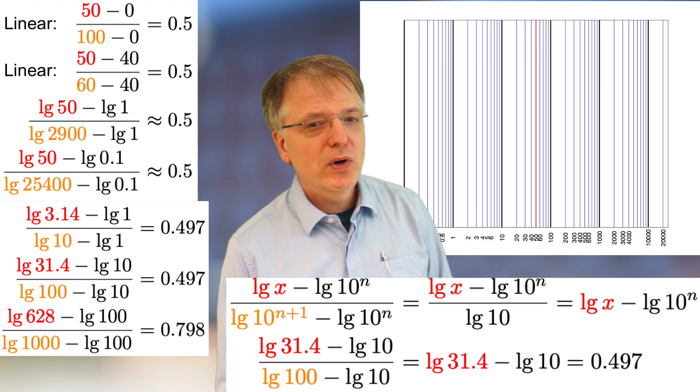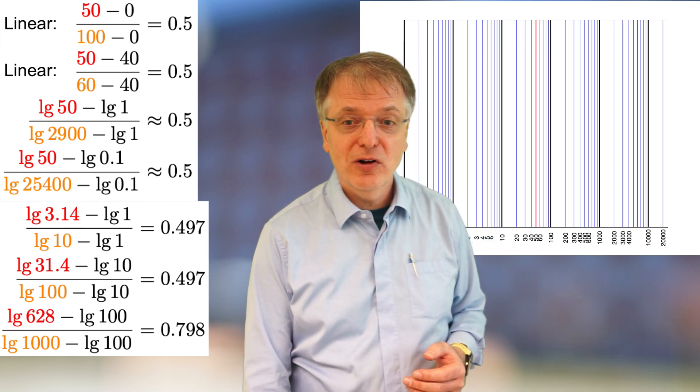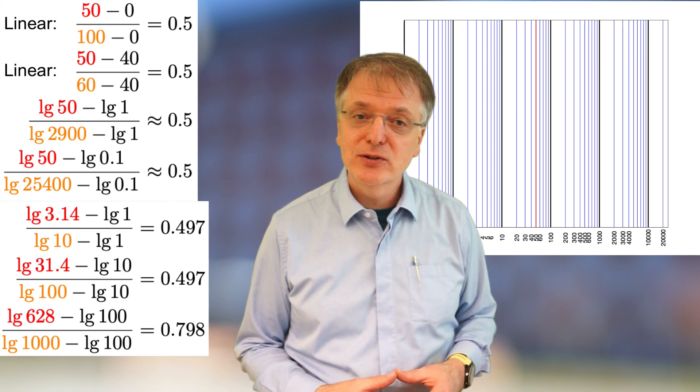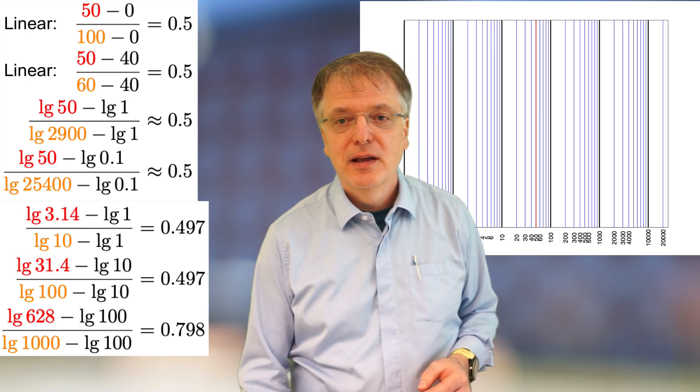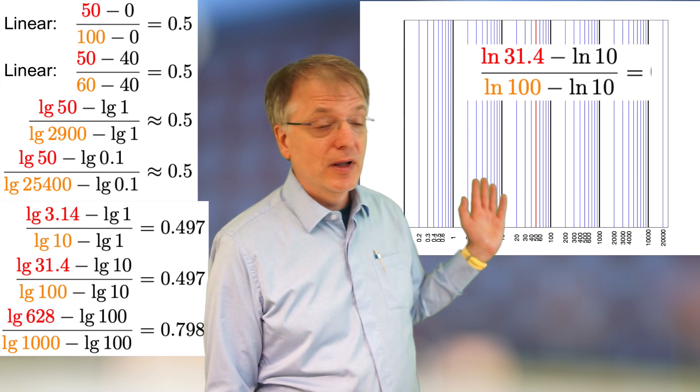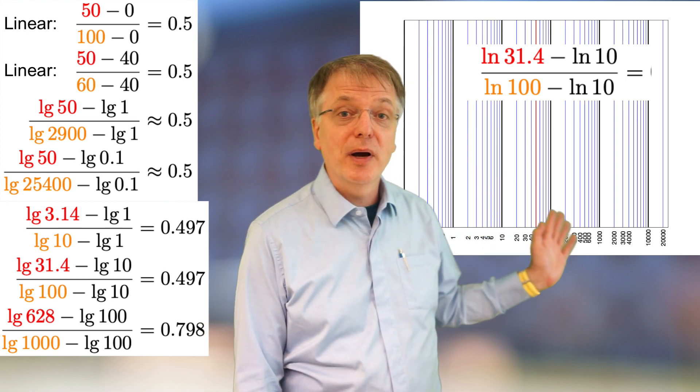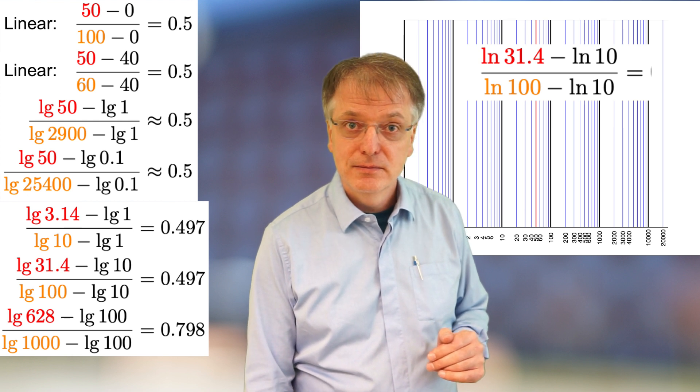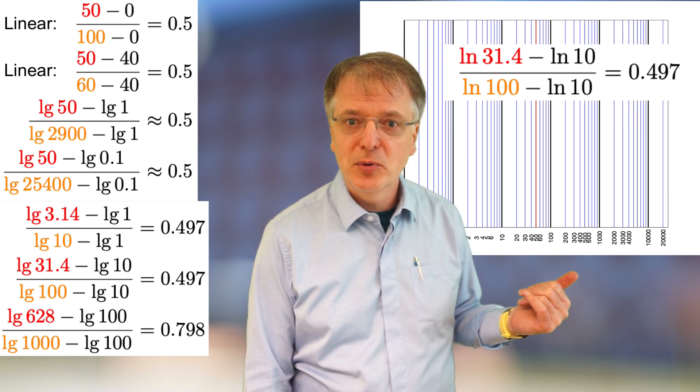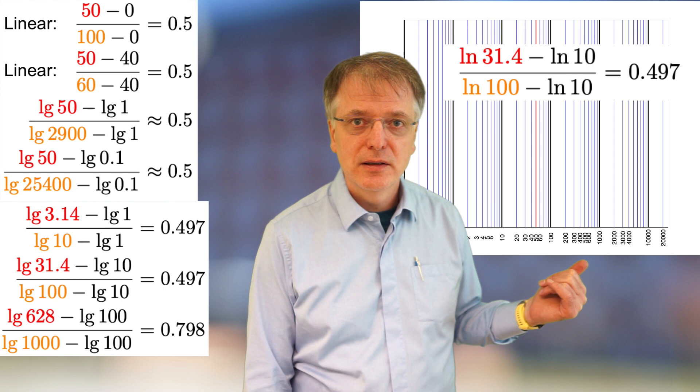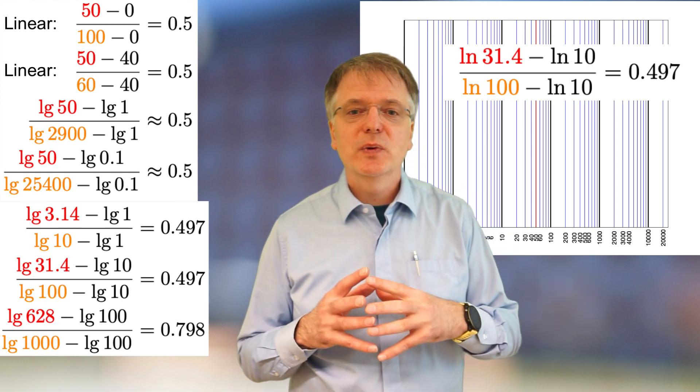Okay, but what if you don't have log 10 on your calculator, but you do have the natural logarithm ln. Let's try that and take ln of 31.4 minus ln of 10 and divide that with ln of 100 minus ln of 10. You still get the same result, 49.7%. Why is that? Well, to understand that, we need to take a closer look at what the logarithm is and how you can change the base of a logarithm.